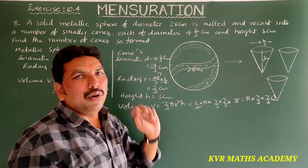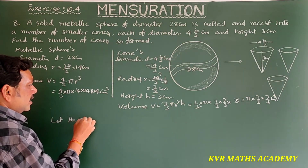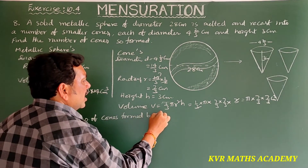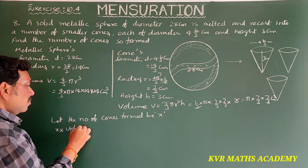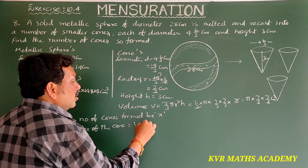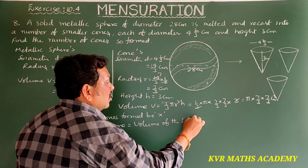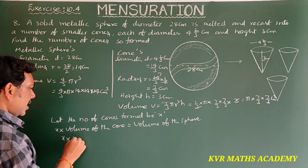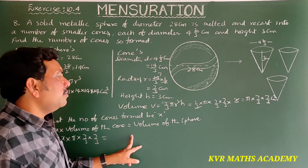Volume of the cone is 1/3 × π × (7/3)² × 3. Let the number of cones formed be x. So x × volume of cone = volume of sphere. That gives x × 1/3 × π × (7/3)² × 3 = 4/3 × π × 14³.